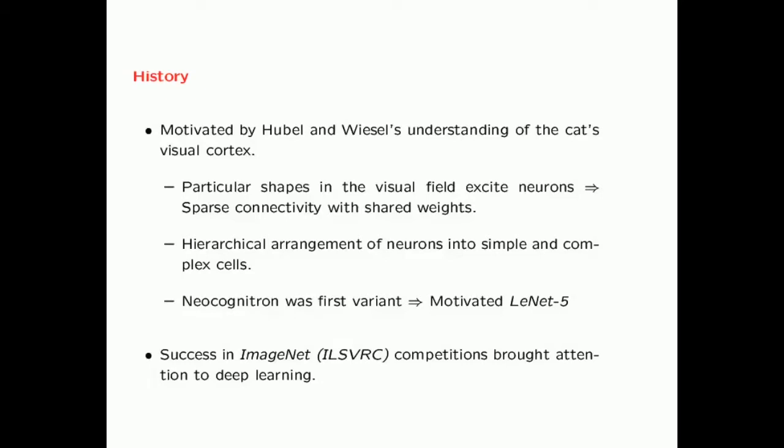In biological networks, there is often a hierarchical arrangement of neurons into simple and complex cells, also from Hubel and Wiesel's understanding of the cat's visual cortex. Similarly, in the convolutional neural network, you have a hierarchical arrangement of neurons. The first variant of convolutional neural networks was the neocognitron, which motivated LeNet-5.